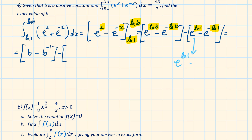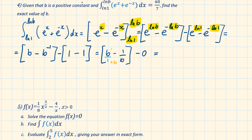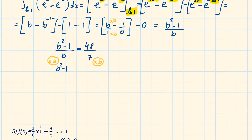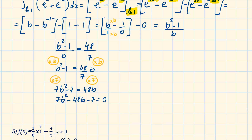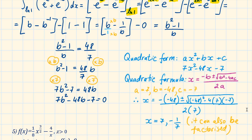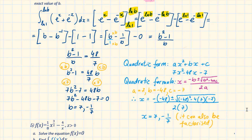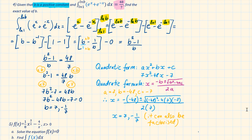This simplifies to b squared minus 1 over b. It is given that this equals 48 over 7, so let's use this to solve the equation. Multiplying both sides by b then by 7 gives 7b squared minus 7 equals 48b. Using the quadratic formula, we get two solutions: 7 and minus 1 over 7. Since b is a positive constant, we take the positive value. The solution is b equals 7.